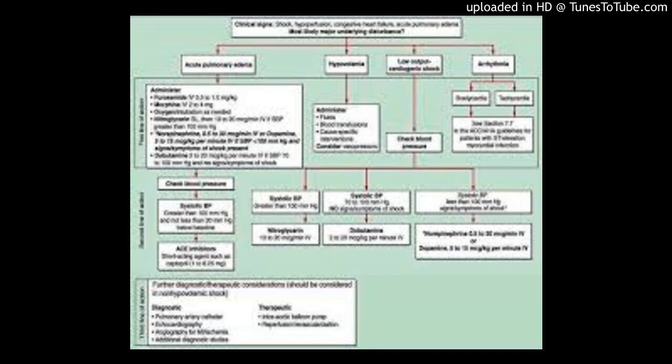The next pneumoconiosis is beryllium. Beryllium exposure can be seen in miners and also in workers in the aerospace industry. Beryllium results in non-caseating granulomas in the lung, in the hilar lymph nodes, and in other systemic organs. That sounds exactly like sarcoidosis, and it is very similar — however, in this case it is driven by beryllium.